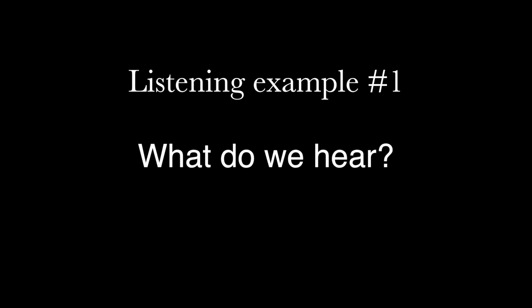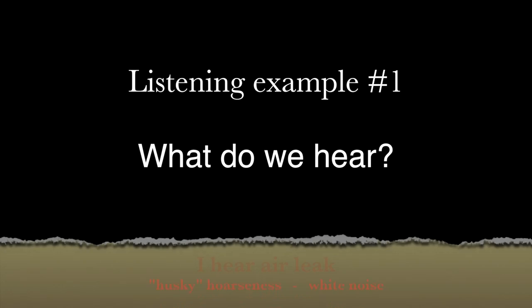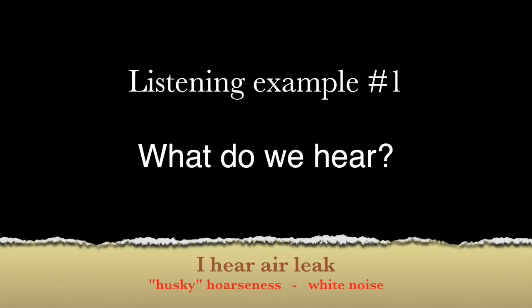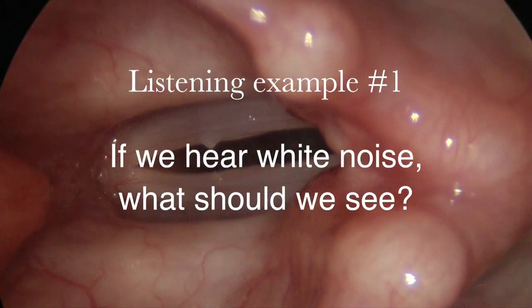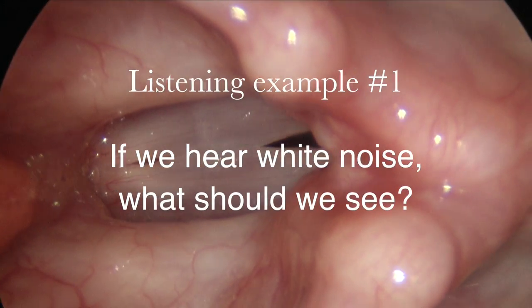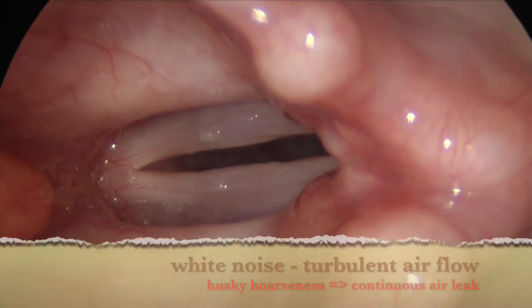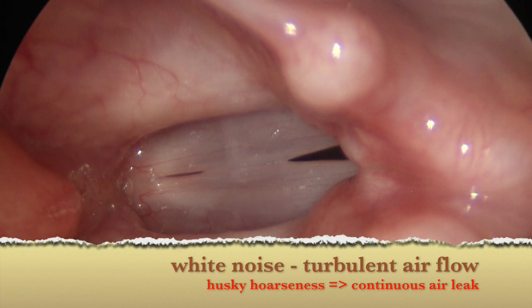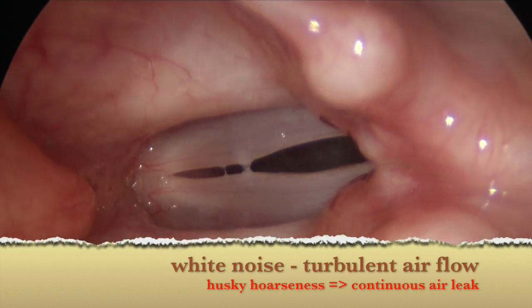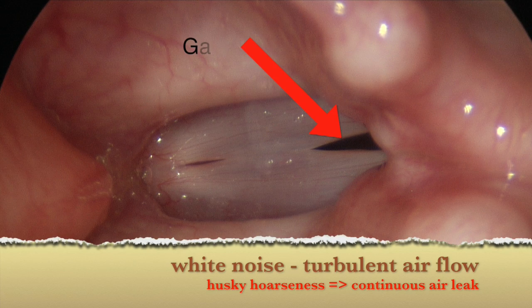Let's take a listen to a hoarse voice. I'm hearing air leak or white noise from turbulent airflow. That means we should see a gap in the vocal cords that never disappears while we're doing stroboscopy — that is, there's a continuous flow of air through that gap.